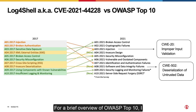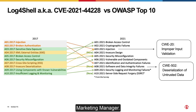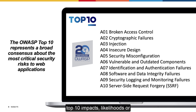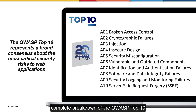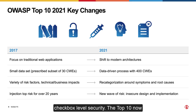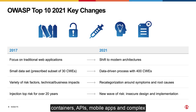For a brief overview of OWASP Top 10, I will leverage the extensive research done by Byron McNaught, Senior Solutions Marketing Manager. Briefly, the OWASP Top 10 represents a broad consensus about the most critical risks to web applications — not necessarily the top 10 impacts, likelihoods, or vulnerabilities. The OWASP Top 10 now encompasses modern application architectures that leverage cloud containers, APIs, mobile apps, and complex software supply chains and CI/CD pipelines.